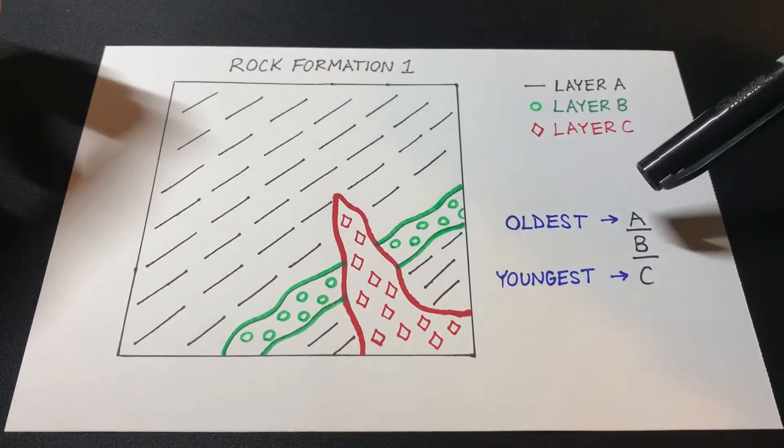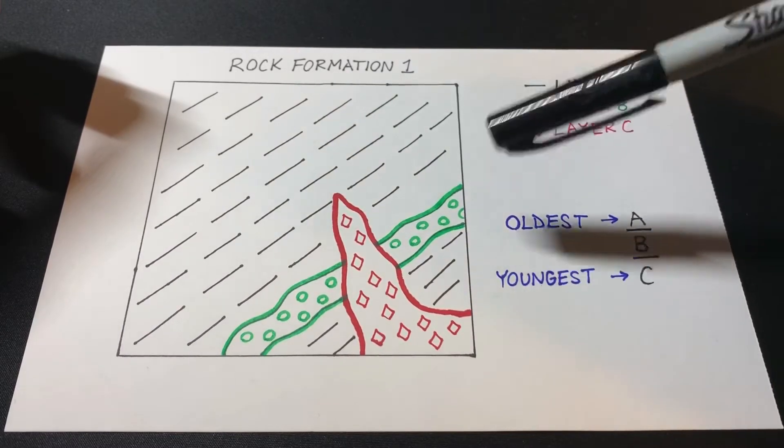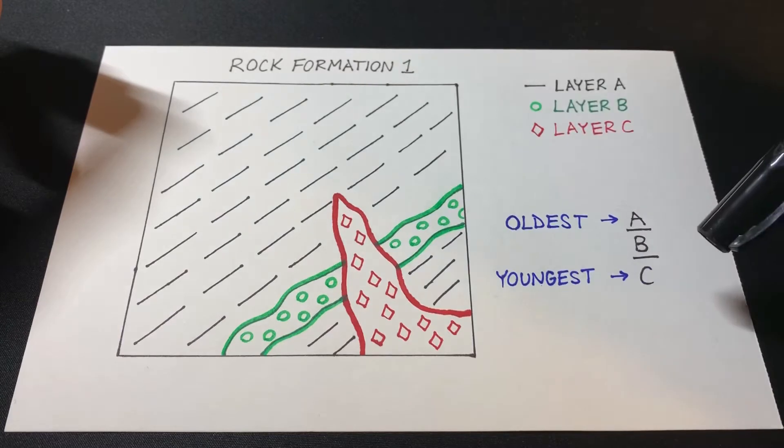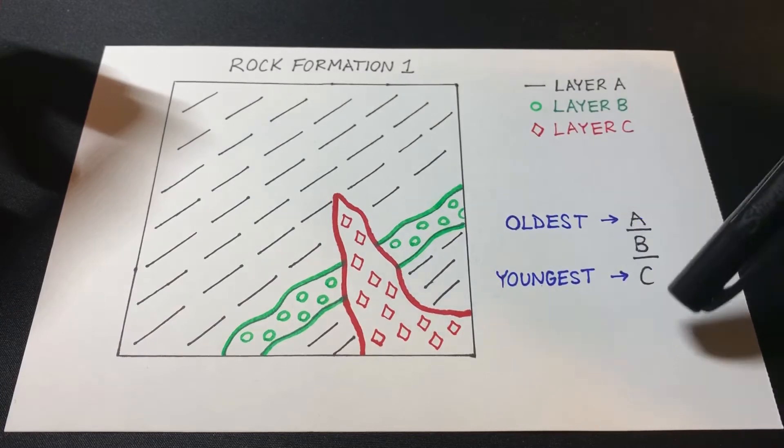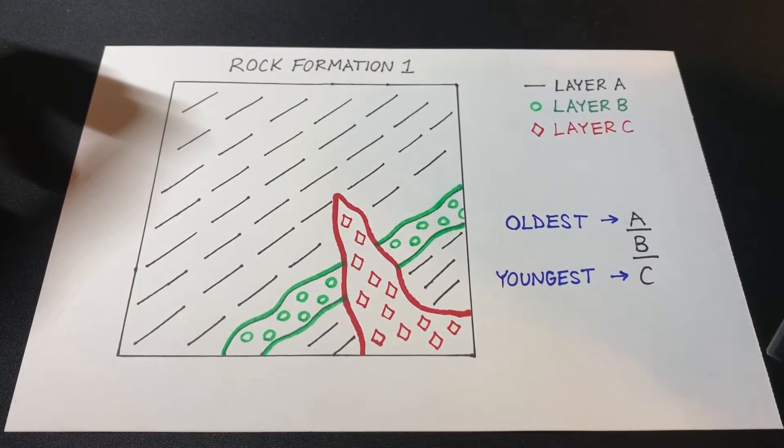So again, layer A is the oldest because B and C are overlapping it. And layer C is the youngest because it is cutting across both A and B. And that would leave B right in the middle between the two.